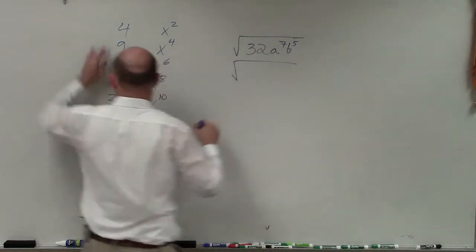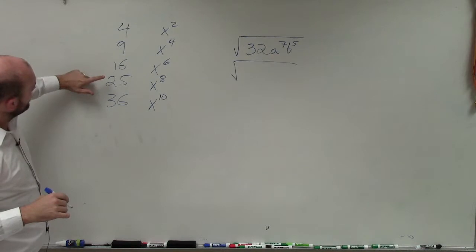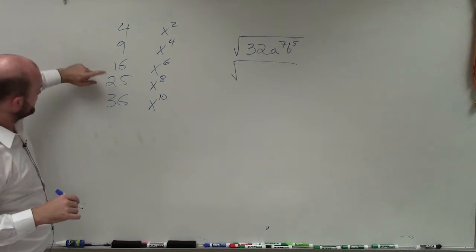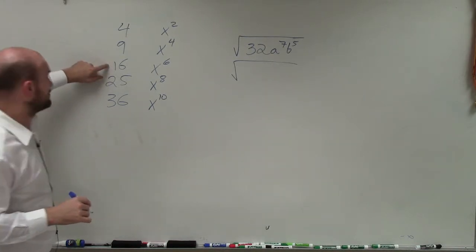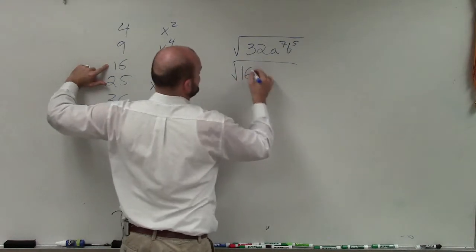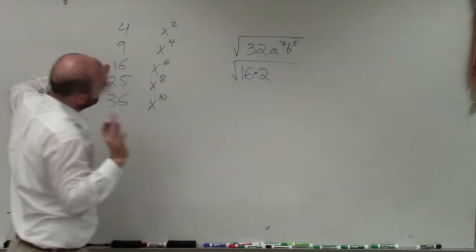So for 32, I look at my squared numbers. 32 is not divisible by 36, not divisible by 25, but it is divisible by 16. So I can rewrite that as 16 times 2.